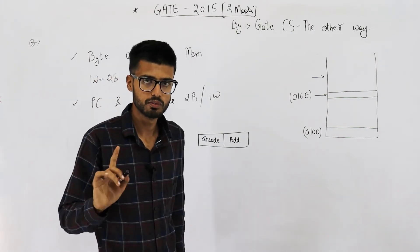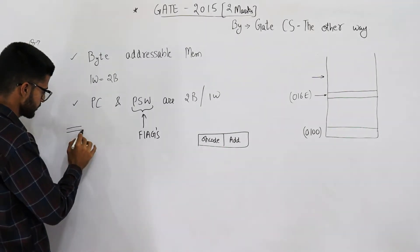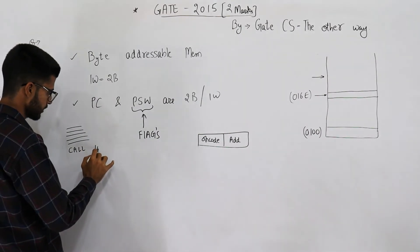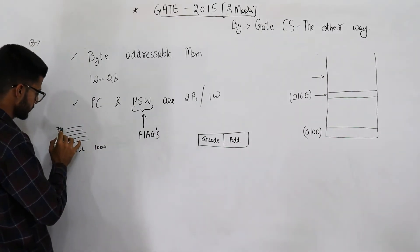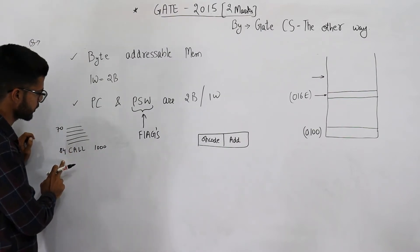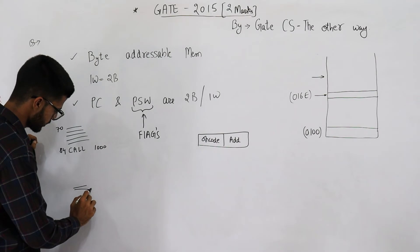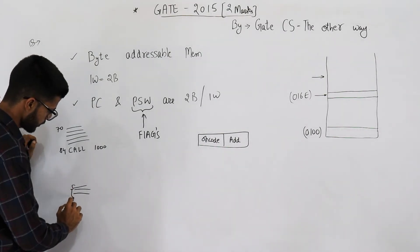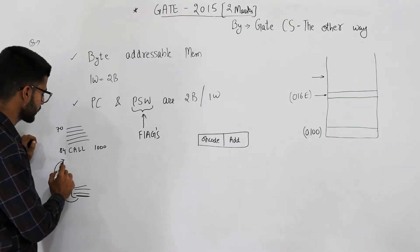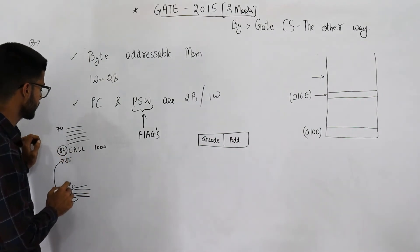Say this is the code that you are executing and here is a call instruction. It's saying some address, say 1000. This is say 70, this one is 84. So address number 84 says go to 1000 or call 1000. Now this is 1000, you have written a function here. After returning from this function, you need to come back to line number 85. That means you have to save this address somewhere.